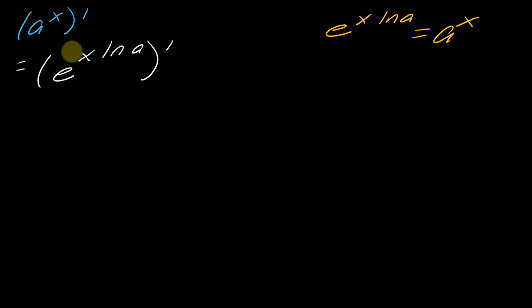The reason I want to find the derivative of this is that I know how to take the derivative of e to the x already, so I can leverage that knowledge. If I want to take the derivative of this, I'm just going to use the chain rule, where my e to the x is the outermost function and x times the natural log of a is my innermost function. If I take the derivative of e to the x, that's just e, and then I leave the inside function intact.